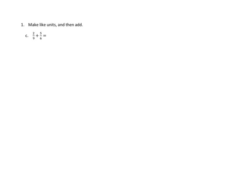Problem number one. Directions are, make like units, then add. And our first problem is 2 ninths plus 5 sixths. So we don't have like units right now. These are ninths and these are sixths, so we can't just add them straight across. So we have to figure out how can we decompose these into like units?